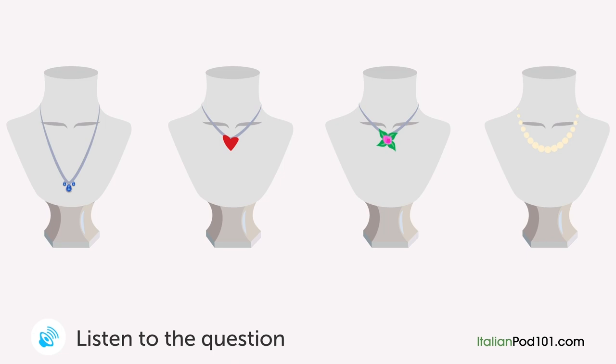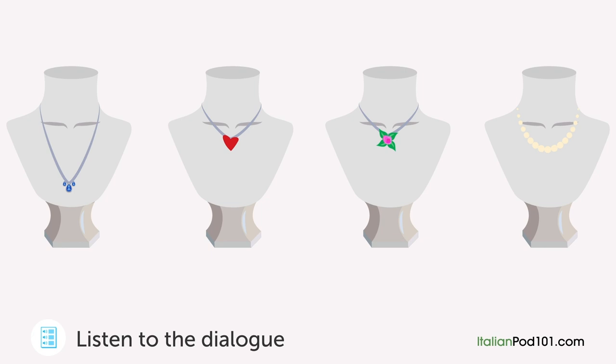A man is looking for a birthday gift for his wife in a jewellery shop. [Question: Which necklace does he buy?] "Can I help you?" "I'm looking for a birthday gift for my wife. What do you recommend?" "What about this necklace?" "Hmm, it seems a bit long. What about these?" "We have one with a flower pendant and another with a heart." "I'm looking for something a bit more refined. How much is this pearl necklace?" "It costs 5,000 euros." "Hmm, it's too expensive." "Ok, I'll take the first one." "Of course, here you are."